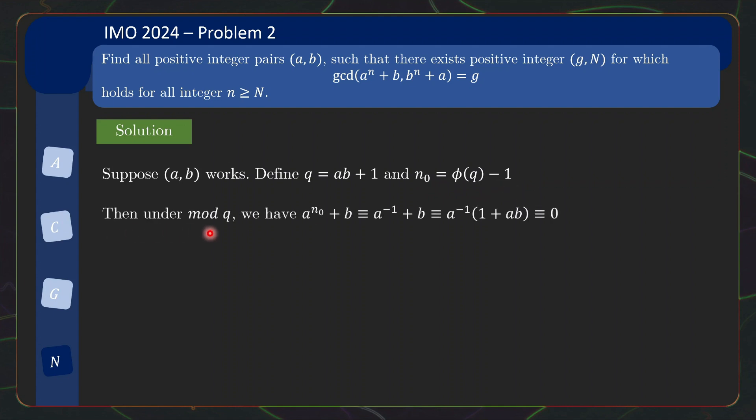Then under mod q, your a^{n_0} + b, what do we have? Because a^{φ(q)} is going to be congruent to 1 by the Euler theorem. Note here a and q are coprime, so we can apply the Euler theorem. So if you minus 1, then you get the a inverse over here.